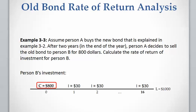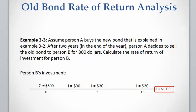Person B is buying the bond at a cost of $800 and is going to receive $30 every six months for 16 periods. At the end of the 8th year, or the 16th six-month period, Person B is going to receive the face value of $1,000.